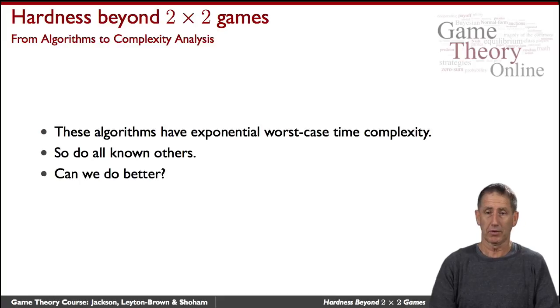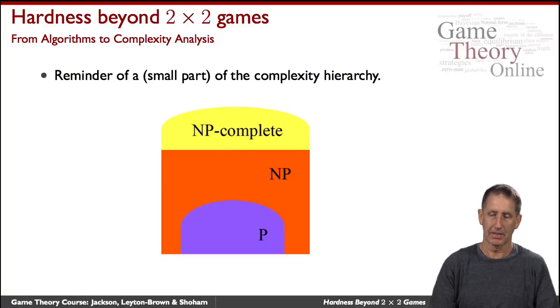These procedures do have exponential worst case, so the question is can we do better? Are there procedures that are less than exponential in the worst case? That takes us from the realm of complex algorithms to the realm of complexity analysis.